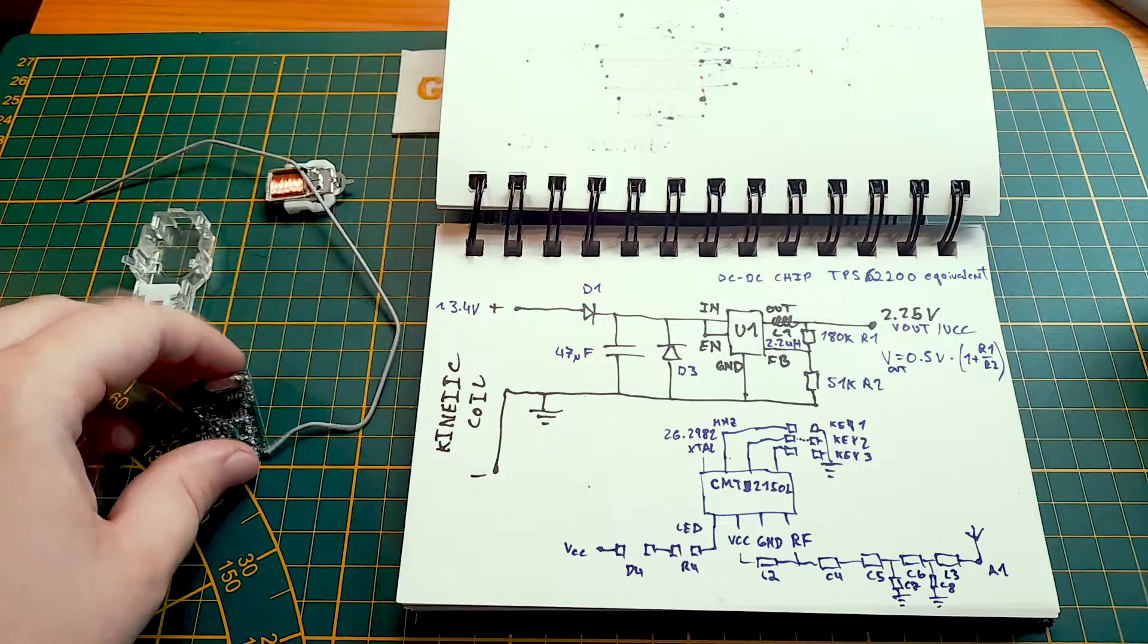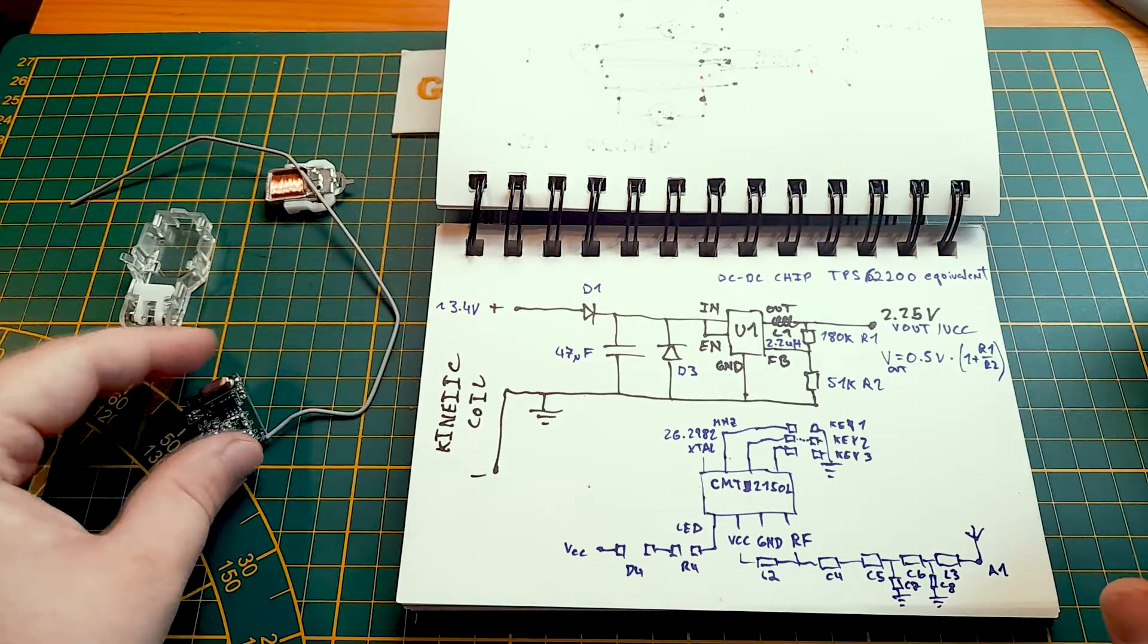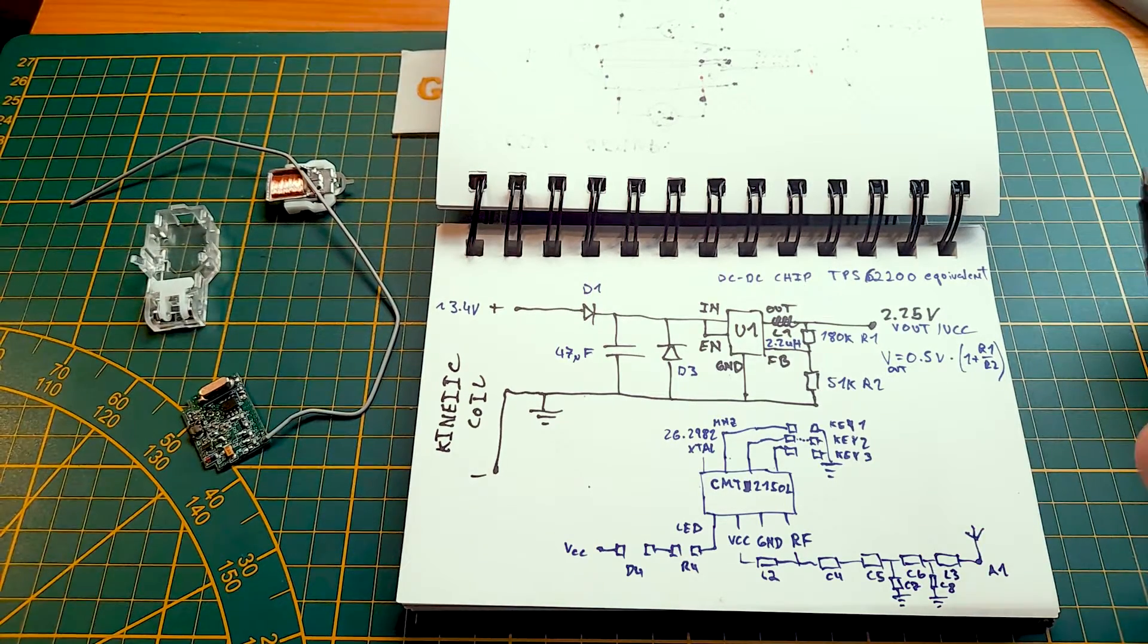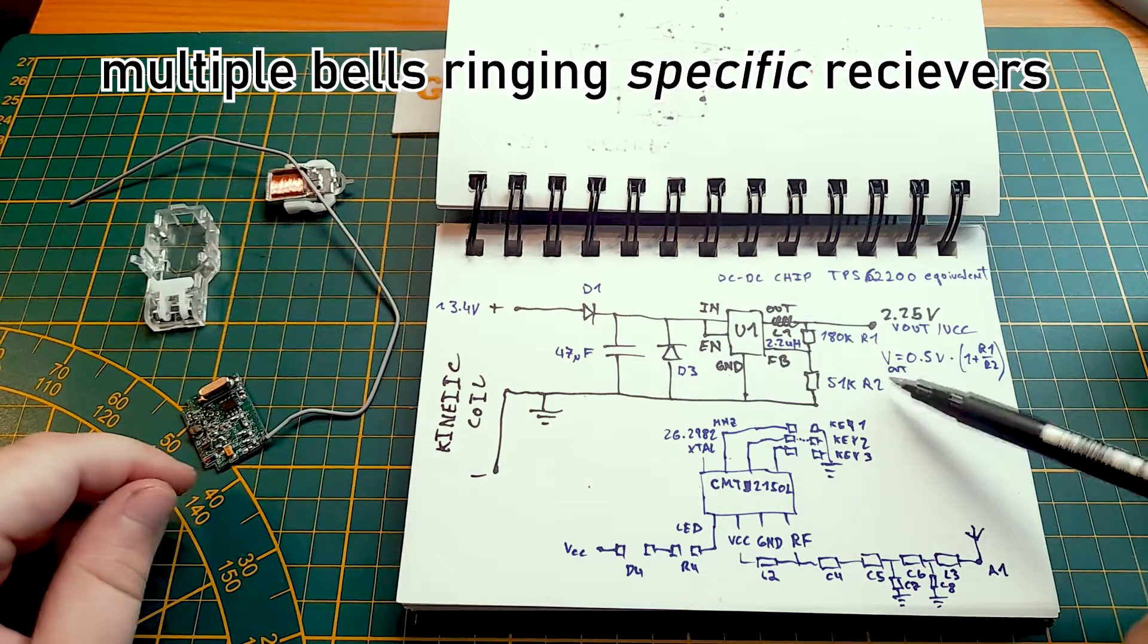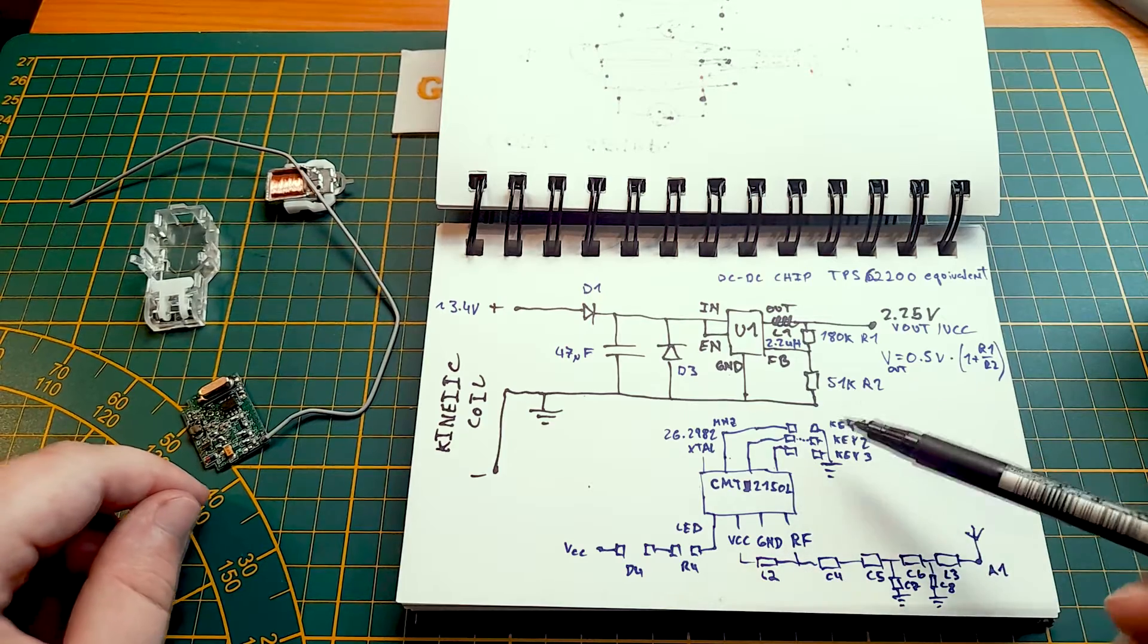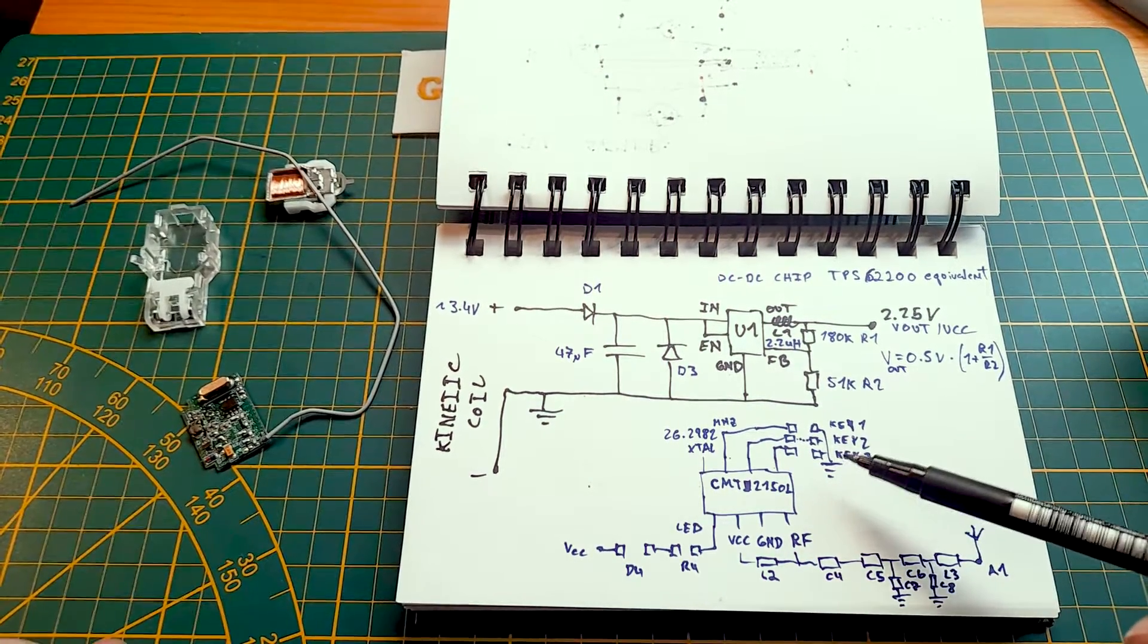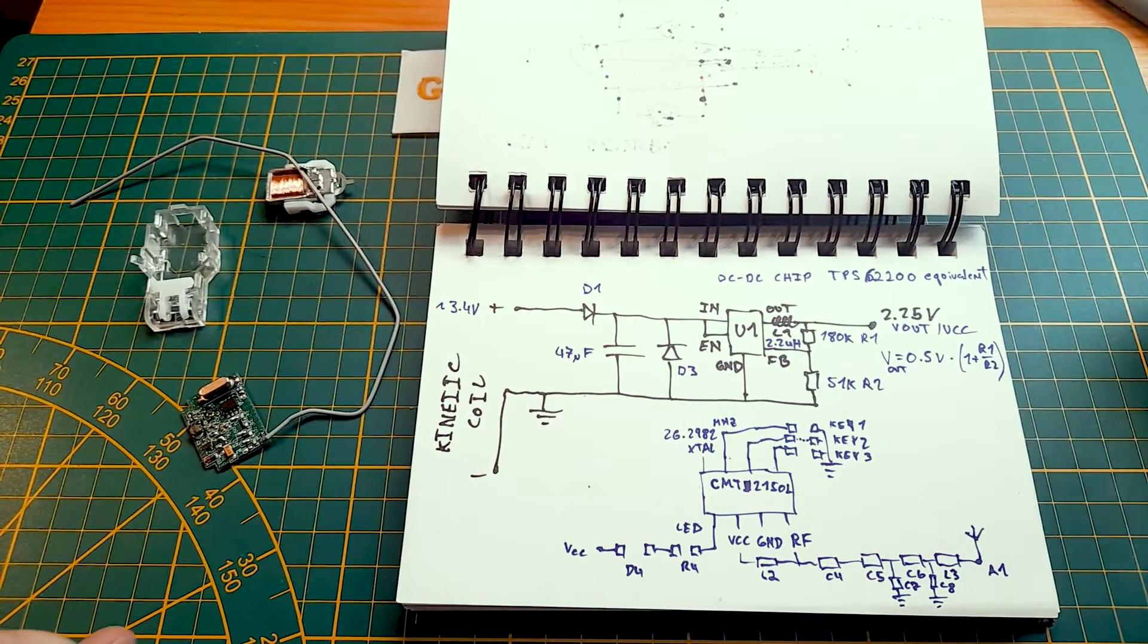So you can have either multiple bells actuating one receiver or one receiver receiving multiple bells or multiple bells activating just one receiver. So each key apparently has a different code programmed into the chip. And when the key is depressed or jumpered, it sends off that on-off keying code to the receiver, which activates the ringing.